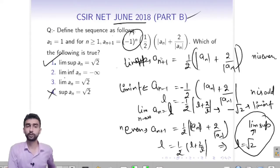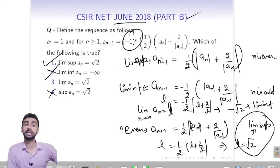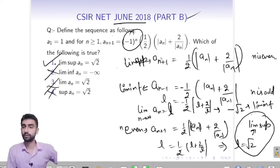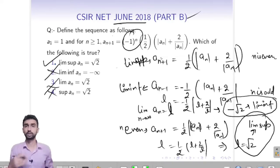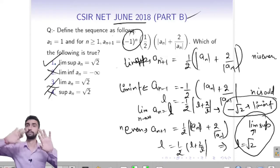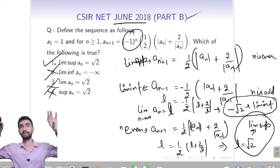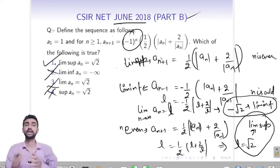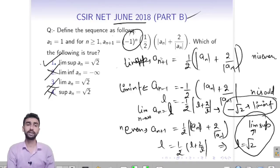The second option says lim inf is minus infinity — that is incorrect. The third option says the limit of An is root 2 — that is also incorrect, because lim sup is different and lim inf is different. So that limit can't reach root 2 because it approaches differently for lim sup and lim inf. Therefore option 1 is correct here.